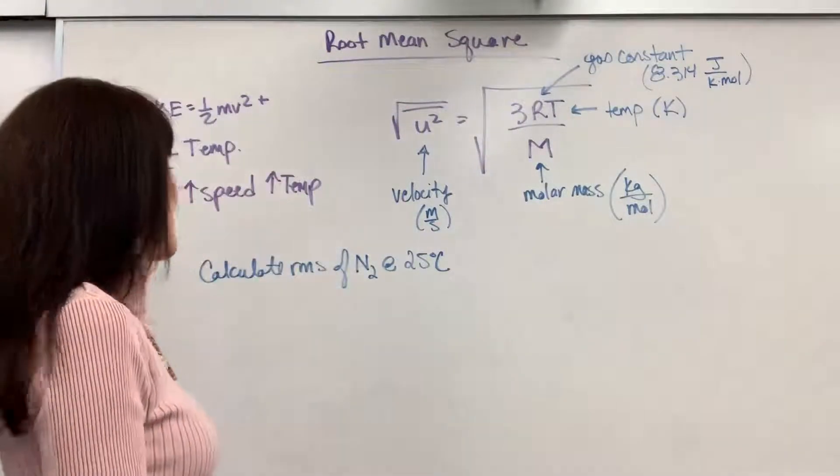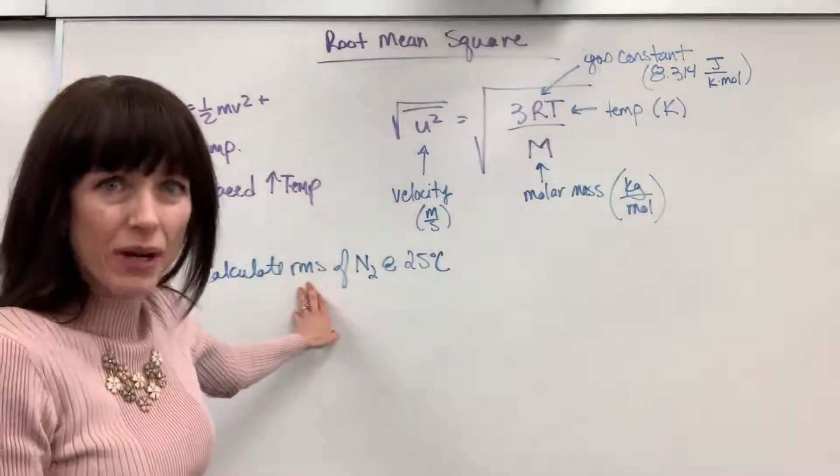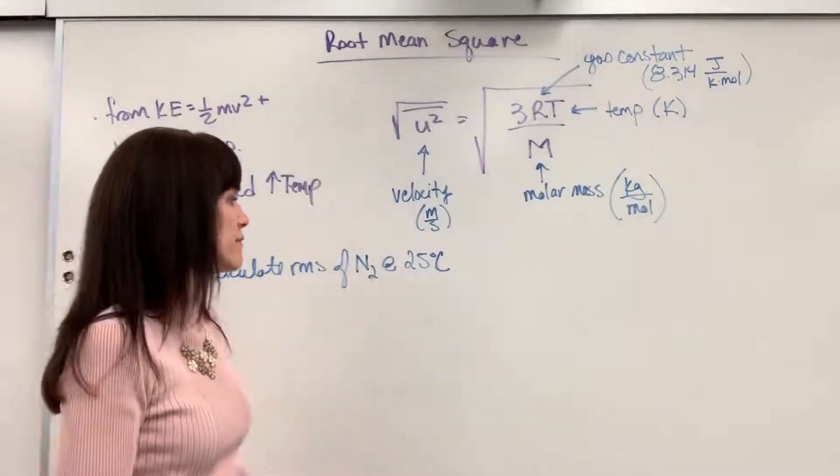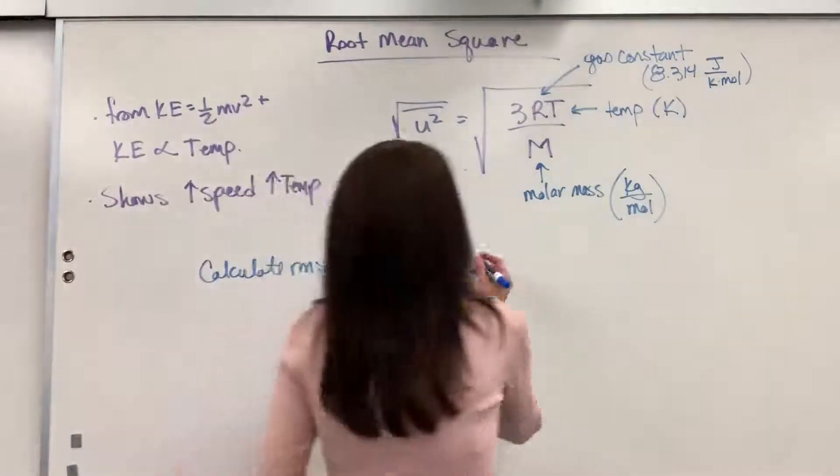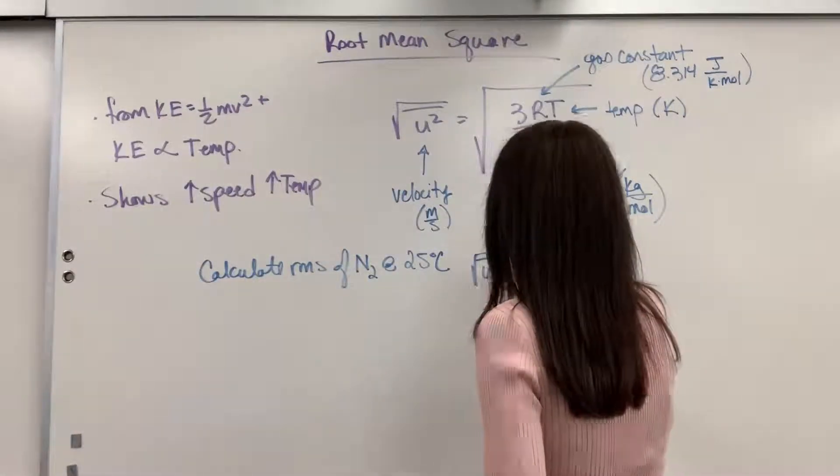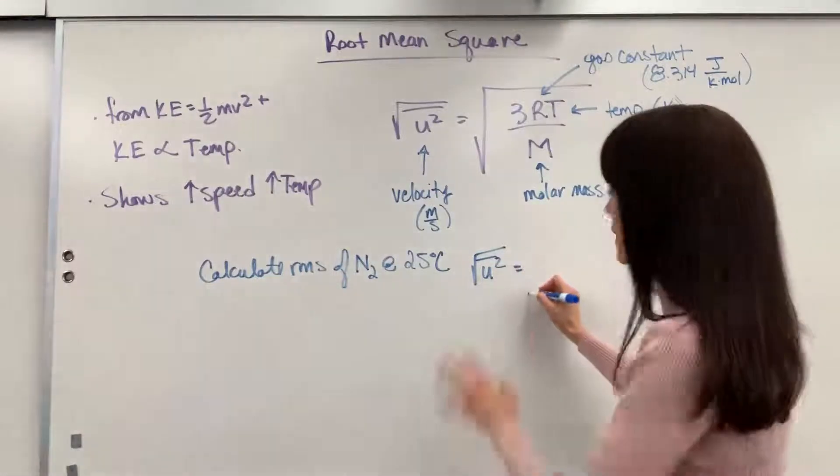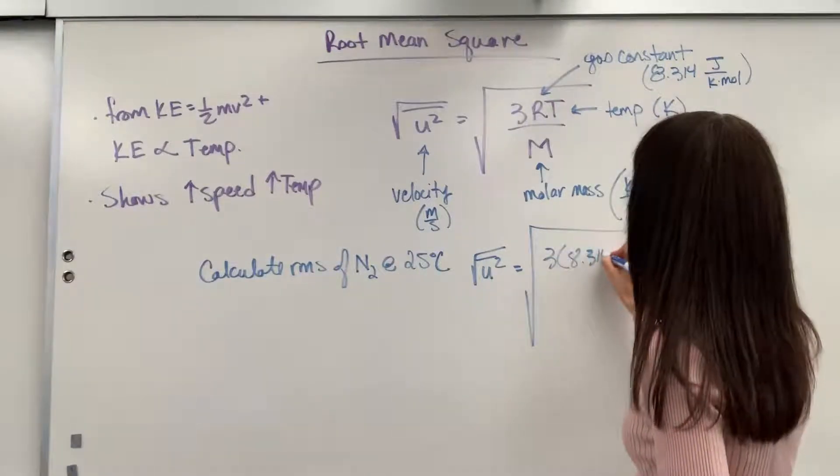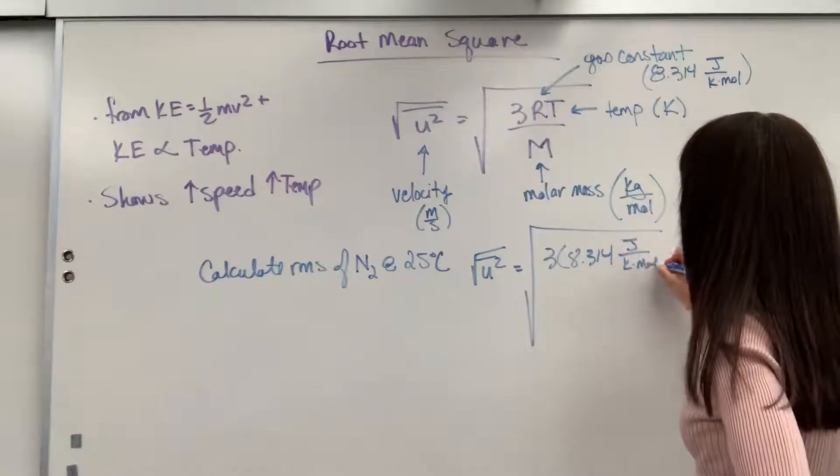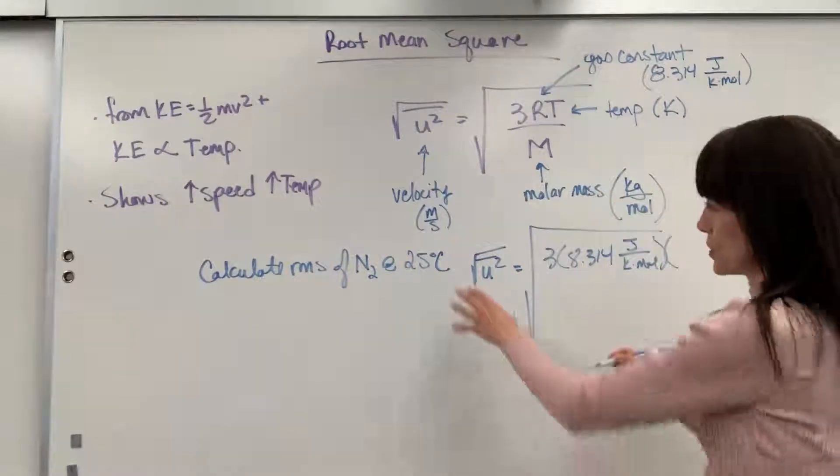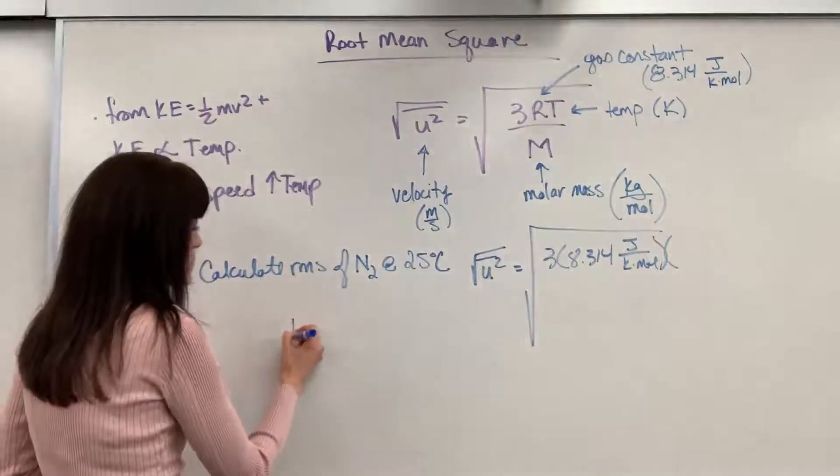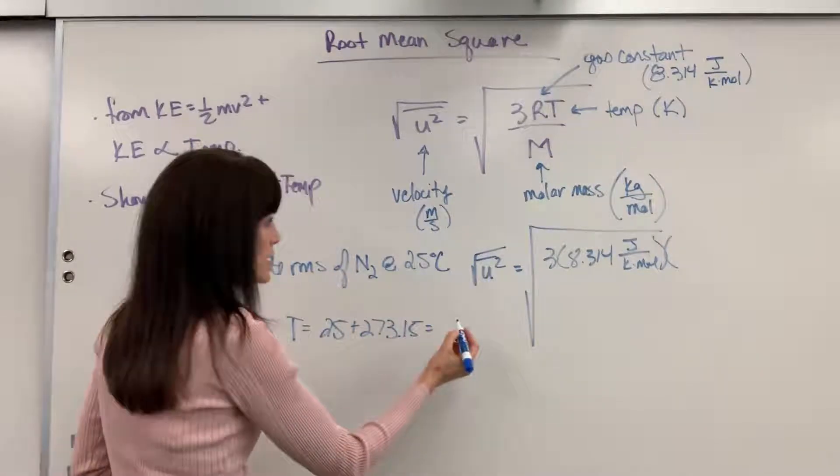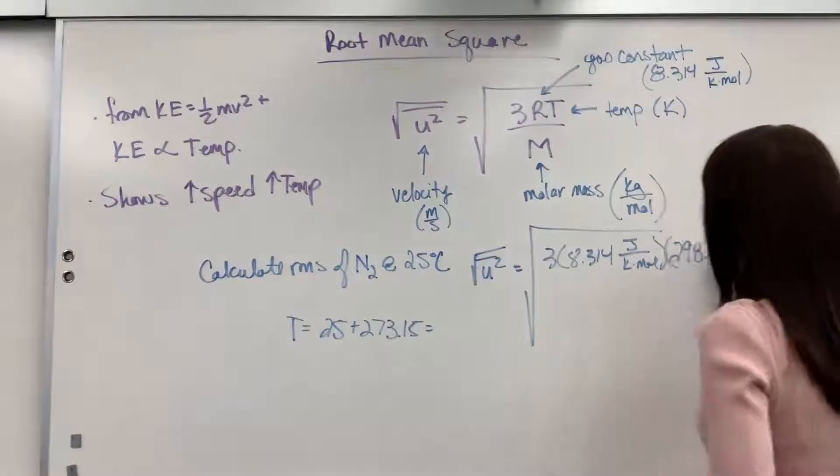Let's go ahead and do a problem together. It says calculate the RMS, so root mean square. It's just a fancy way of saying velocity, the speed, of N2, so nitrogen gas at 25 degrees C. Let's go ahead and plug in. We are going to have our velocity squared equals, and that's the square root of it, sorry, square root of 3 times the gas constant, 8.314 joules, divided by Kelvin times mole, times temperature. It has to be in Kelvin. So temperature is going to be 25 plus 273.15, and that will give us 298.15 Kelvin.